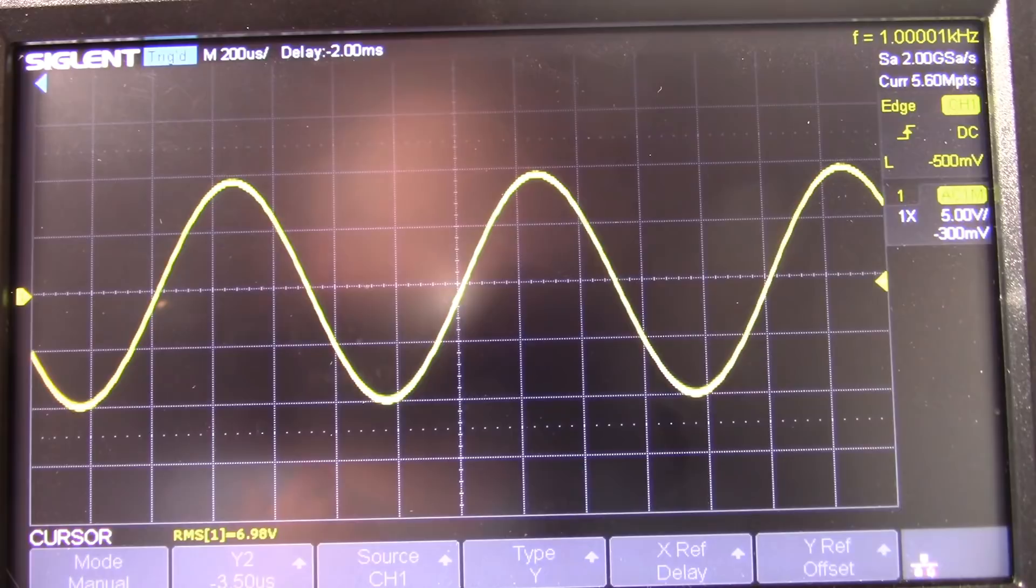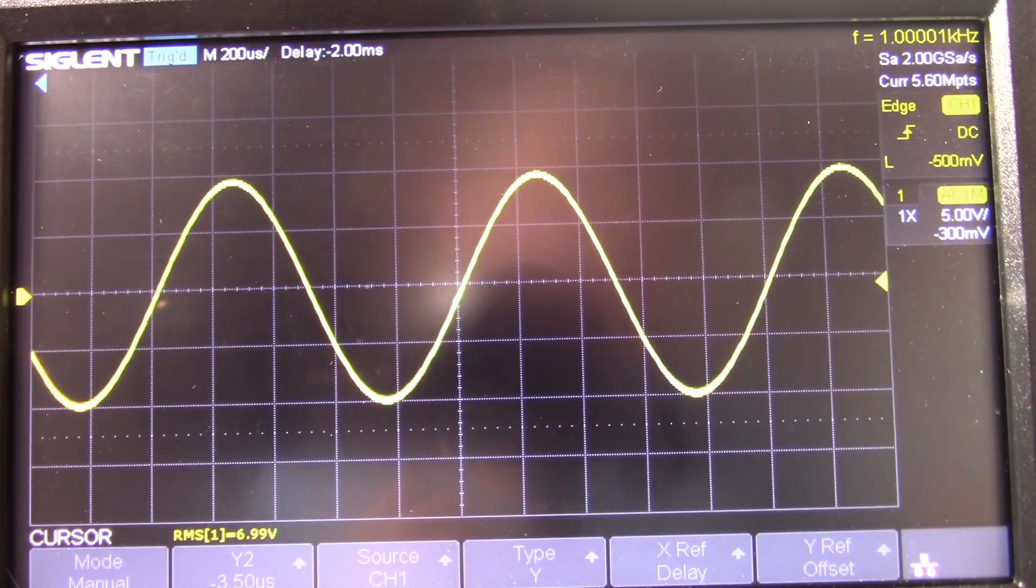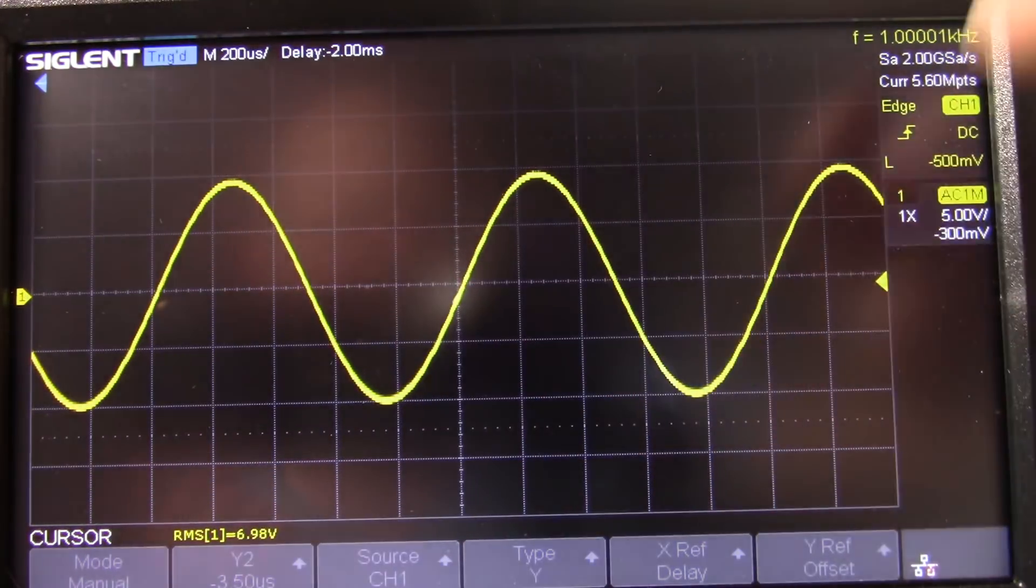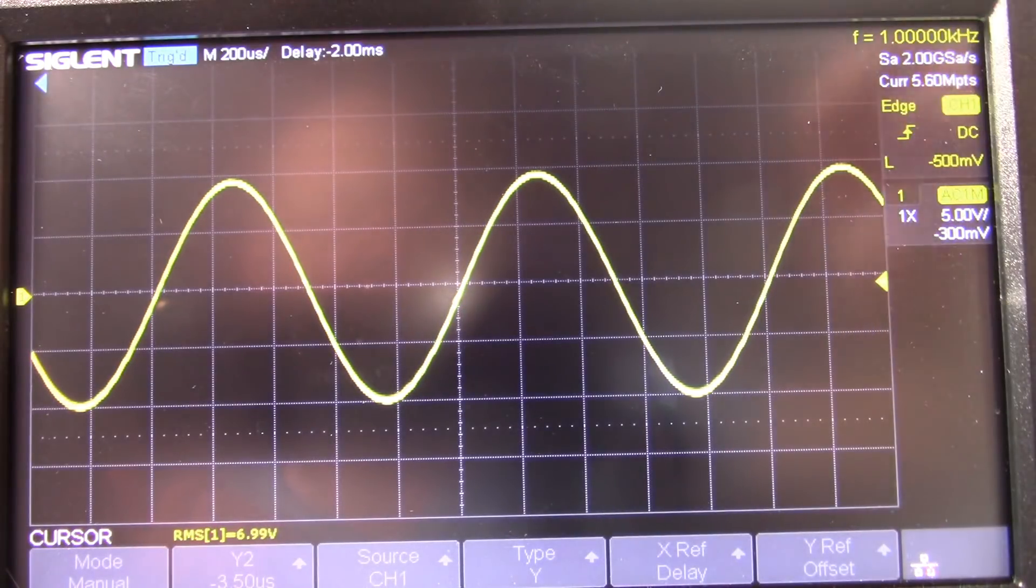The heat sink is getting pretty warm, it's drawing about an amp and a half off the supply. The resistors on the subwoofer channel are not getting warm because it does roll off well before one kilohertz. I'm measuring one of the stereo channels by the way.